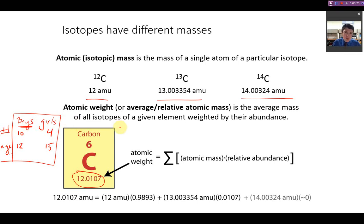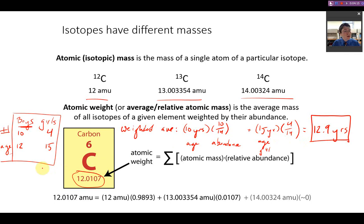To find the actual average, what we do is we take the age of the boys times the number of boys, or the fractional amount, the percentage, there are 10 out of 14 of the people are boys, plus the age of the girls, which is 15 each, times its fractional abundance, which is 4 out of 14. When you add those together, you get that the weighted average is 12.9 years old, which matches what we predicted, that it should be closer to the average age of the boys themselves, because there are more boys than girls.